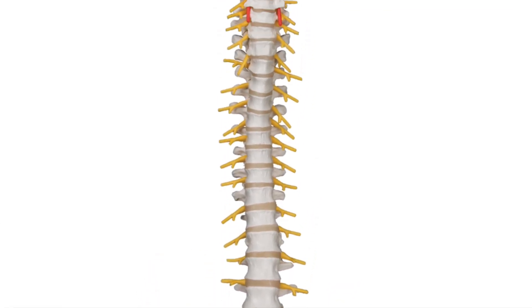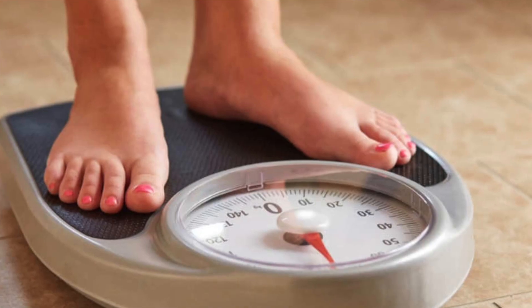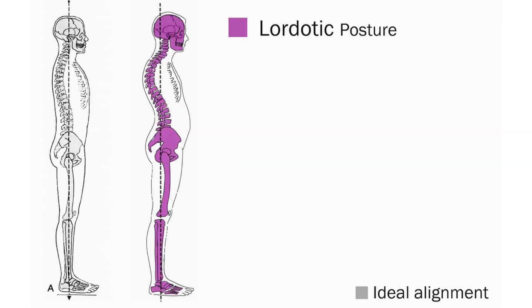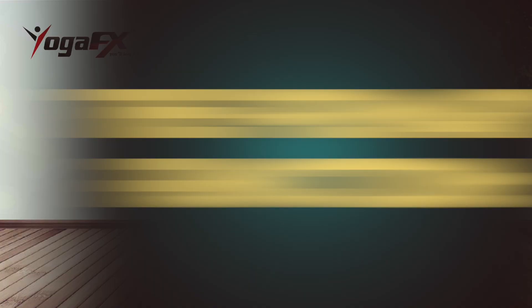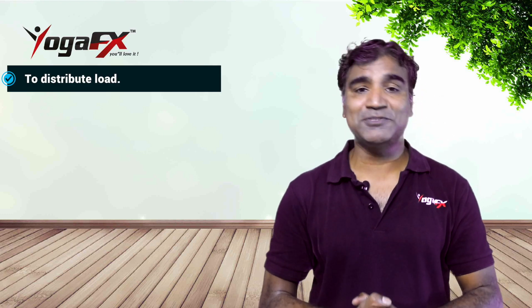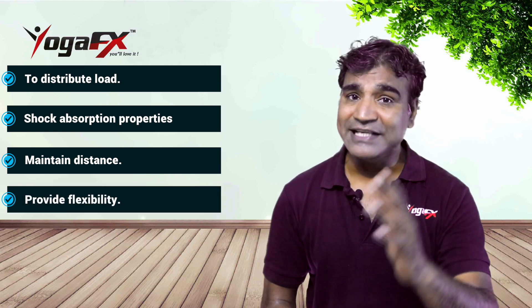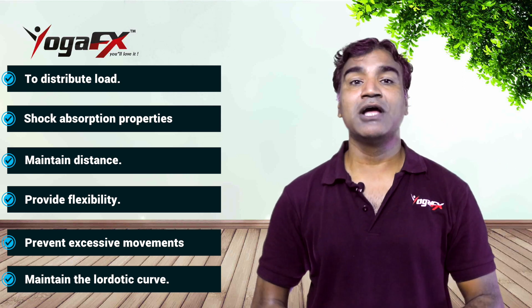The lumbar spine consists of five vertebrae, L1 to L5, which progressively increase in size going downward. It supports the upper spine, connects to the pelvis, and bears most of the body's weight as well as the stress of lifting and carrying. Many back problems occur in the lumbar spine. The lumbar spine bends inward to create a C-shape known as a lordotic curve. It contains five intervertebral discs whose primary functions are: distributing compressive loads and providing shock absorption, maintaining distance between vertebral bodies, providing flexibility, and preventing excessive movements while maintaining the lordotic curve.